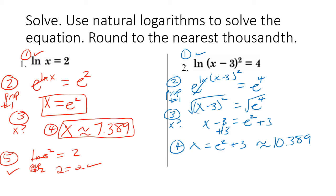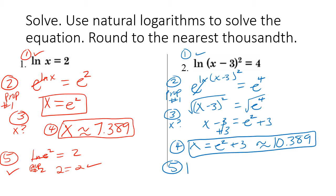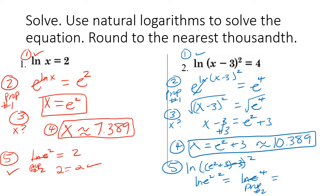Step five: check using the exact value. Plugging in, natural log of (e squared plus three minus three) squared equals natural log of (e squared) squared, which equals the natural log of e to the fourth. Using property number two, this equals four, which equals our right-hand side — correct!